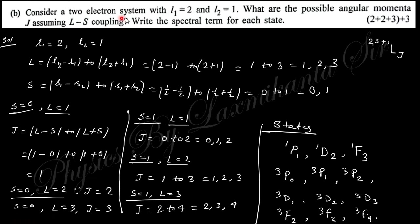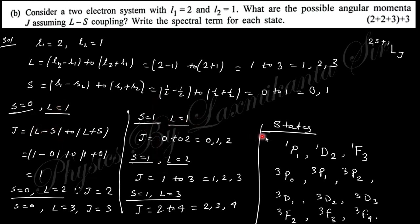Consider two electrons with orbital angular momenta l₁ and l₂. What are the possible total angular momenta? The total L ranges from |l₁−l₂| to l₁+l₂, giving L=1 to 3. The total spin S=0 or 1. Combining L and S values, the possible spectroscopic terms are obtained.